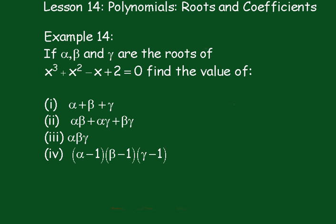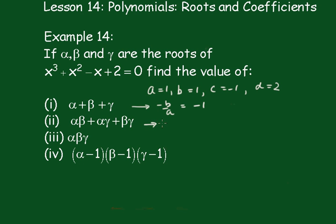Example 14: if alpha, beta and gamma are the roots of X³ + X² - X + 2 = 0, find the value of: alpha + beta + gamma; alpha·beta + alpha·gamma + beta·gamma; alpha·beta·gamma; and (alpha-1)(beta-1)(gamma-1). Looking at the coefficients: A = 1, B = 1, C = -1, D = 2. So alpha + beta + gamma = -B/A = -1/1 = -1; alpha·beta + alpha·gamma + beta·gamma = C/A = -1/1 = -1; and alpha·beta·gamma = -D/A = -2/1 = -2.